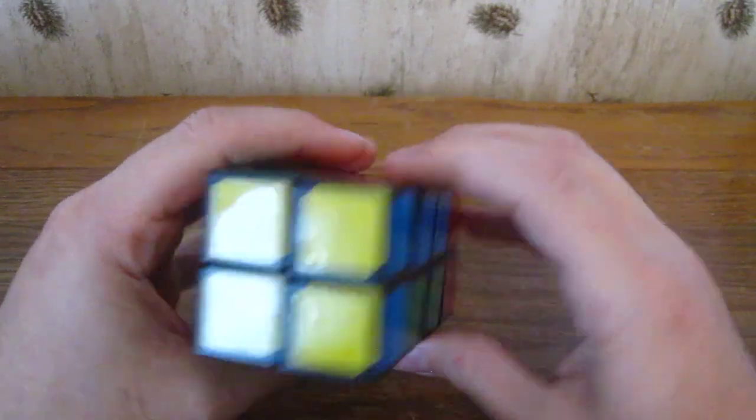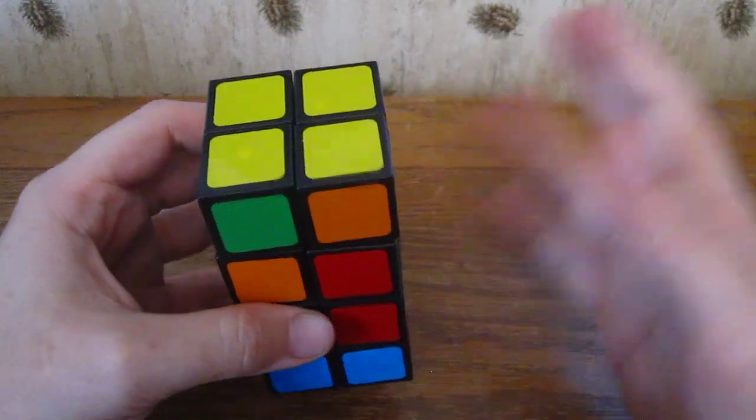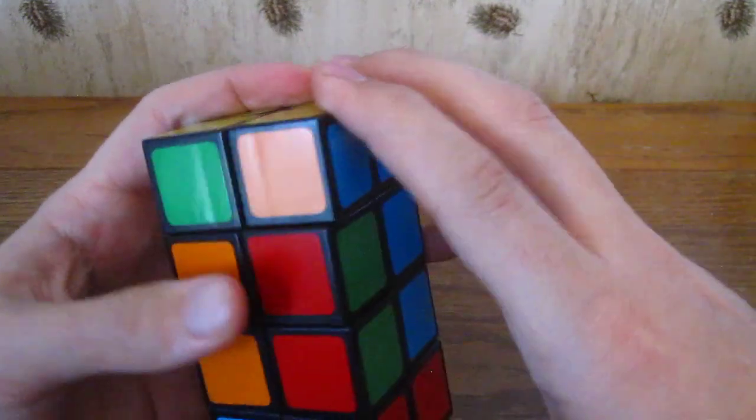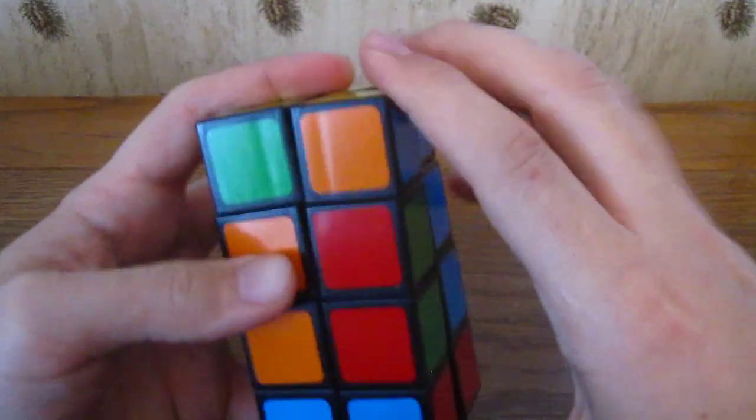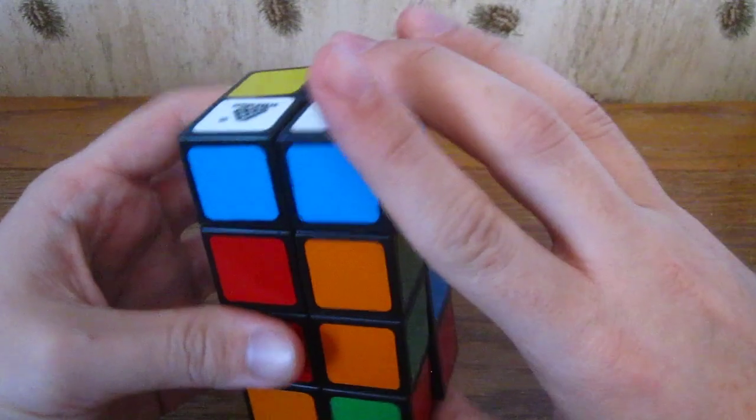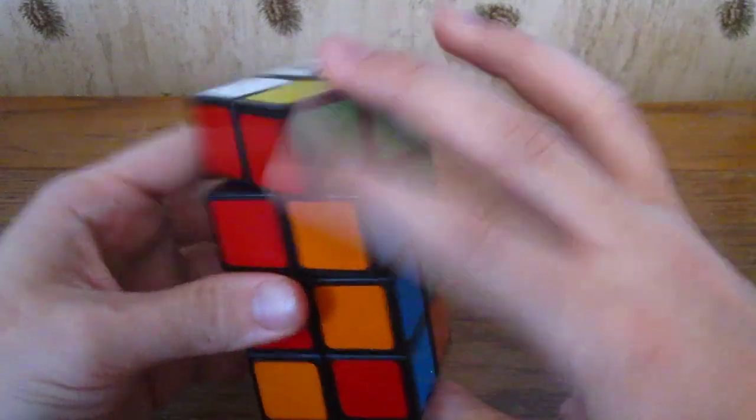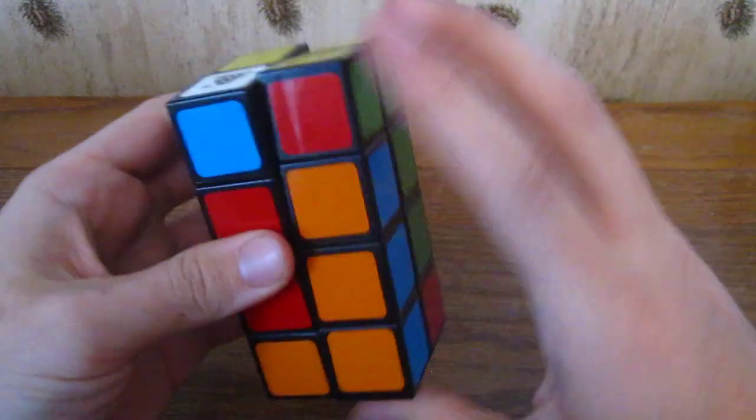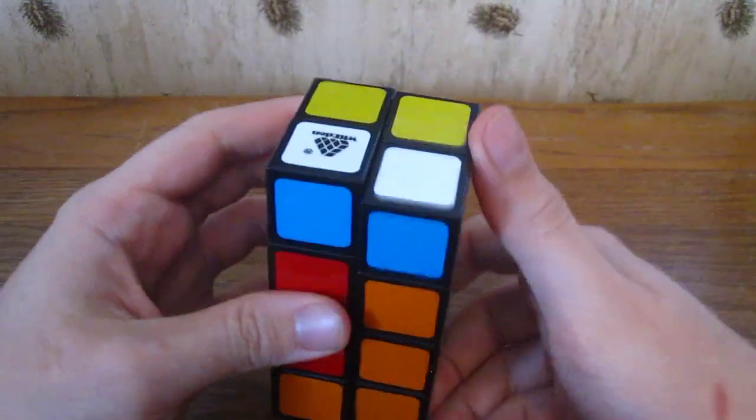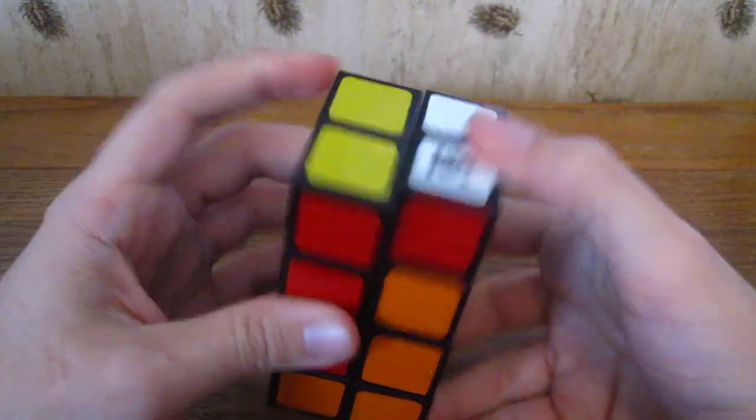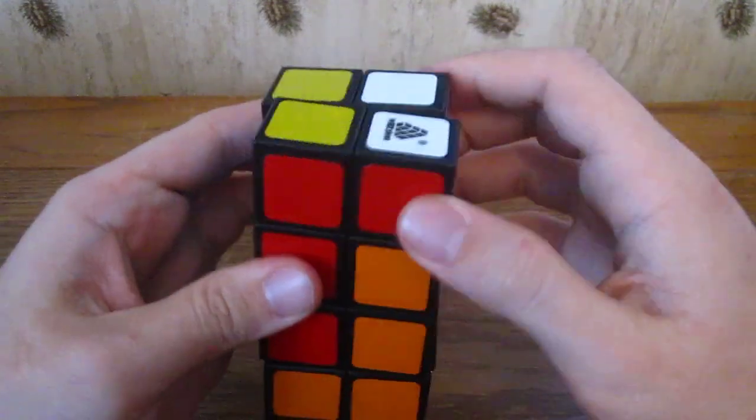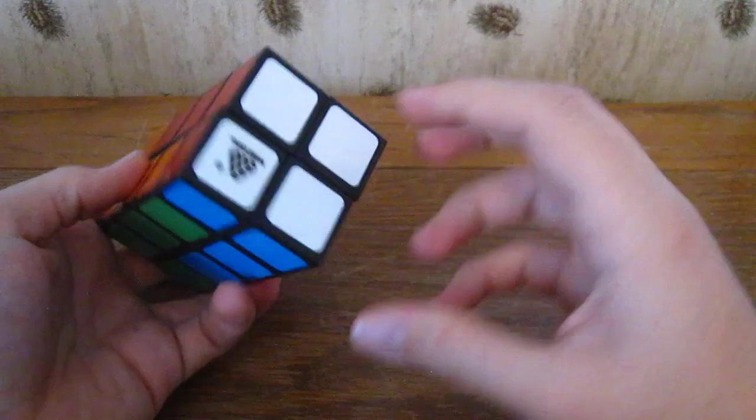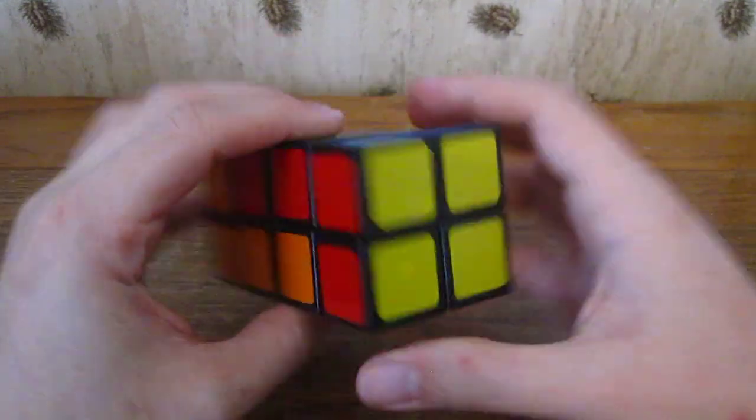We want that bar to be facing to the right, and I'll do the algorithm again: 2f 2r u 2r u prime 2r d 2r u prime and 2r. Once again, white face is back to normal and this face is also solved.